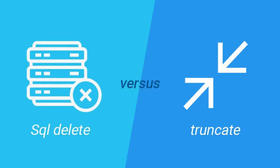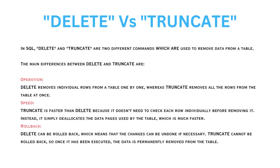The next question is: what is the difference between DELETE and TRUNCATE in SQL? DELETE and TRUNCATE are two different commands used to remove data from a table, but they work differently and have different effects. We can compare them on three parameters. First, on operation: DELETE removes individual rows from a table one by one, whereas TRUNCATE removes all rows from a table at once.